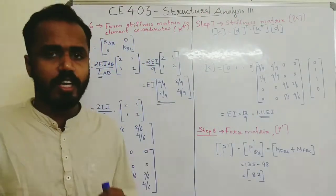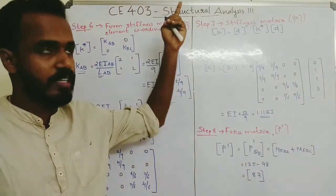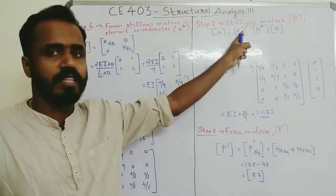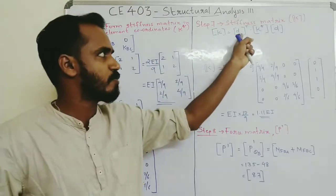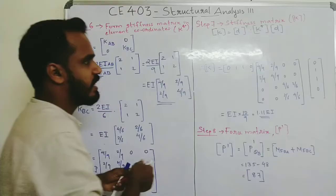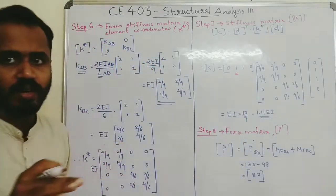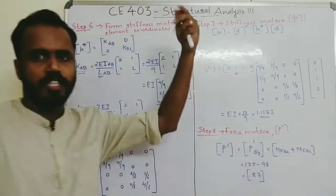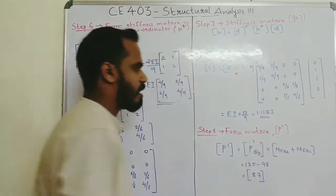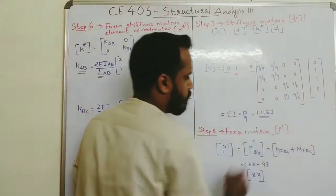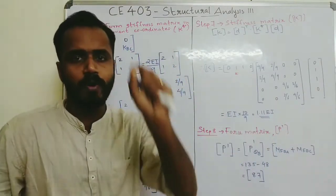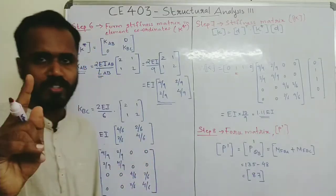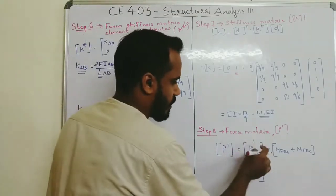Step 7: Form the global stiffness matrix K using K = D-transpose × K-star × D. D-transpose is the displacement transformation matrix. Carrying out this multiplication, we get K = 10EI/9, which is approximately 1.11EI.